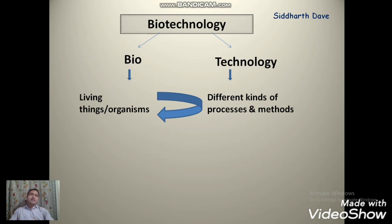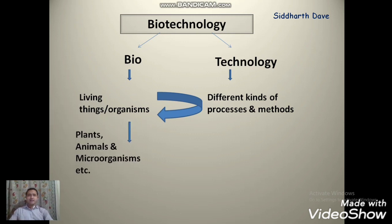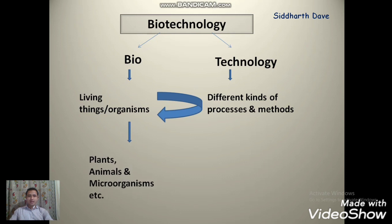आपकी जो NCERT textbook है उसमें chapter number 11 में different different processes दी गई है और उन processes को आप कैसे living organisms में apply कर सकते हो वो सारी चीज़ दी गई है। Living organisms यानि different kinds of plants, animals and microorganisms.